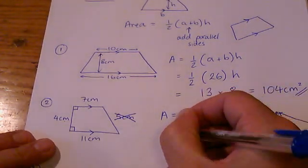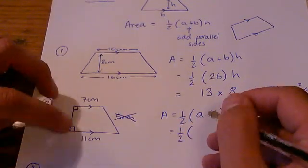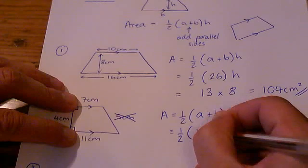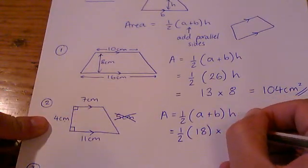So the area is going to be half. Let's add together a plus b: 7 plus 11. That's 18 times the height which is 4.